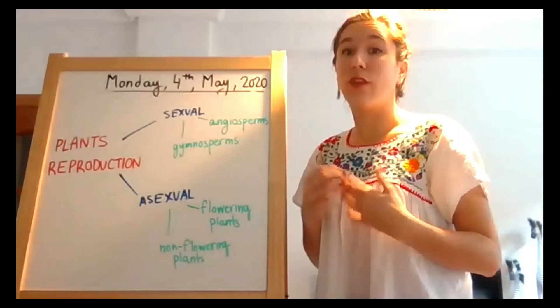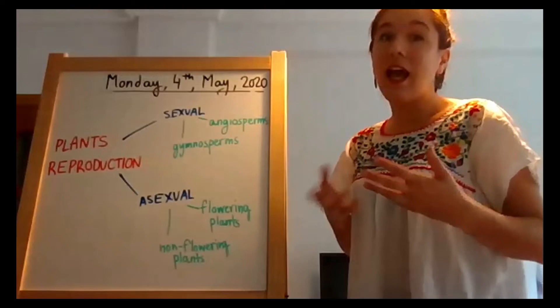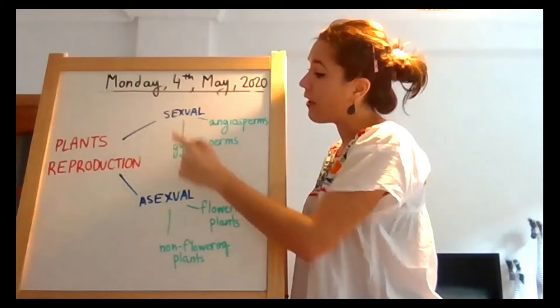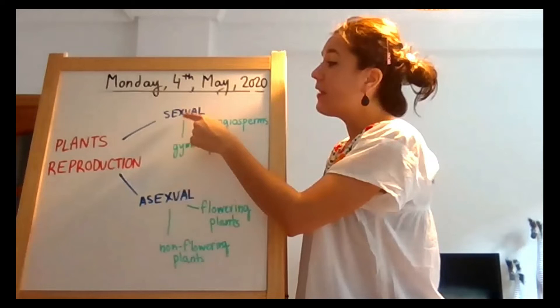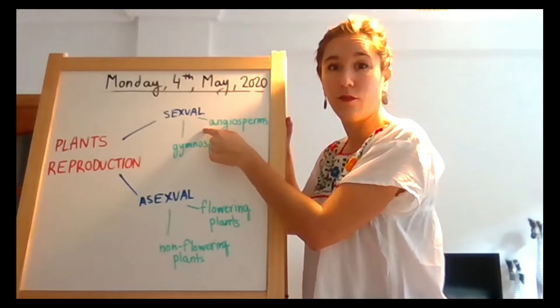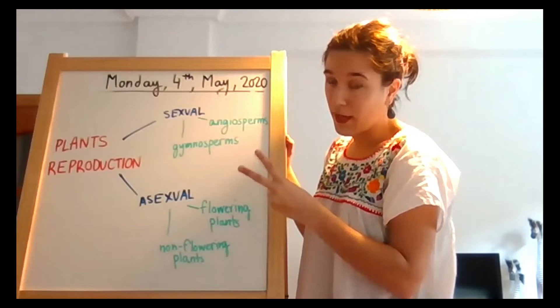Remember that plants have to reproduce because they are living things — seres vivos — just like humans and animals. In plant reproduction we can find two types: sexual reproduction and asexual reproduction. Sexual reproduction is found in two types of plants: angiosperms and gymnosperms.